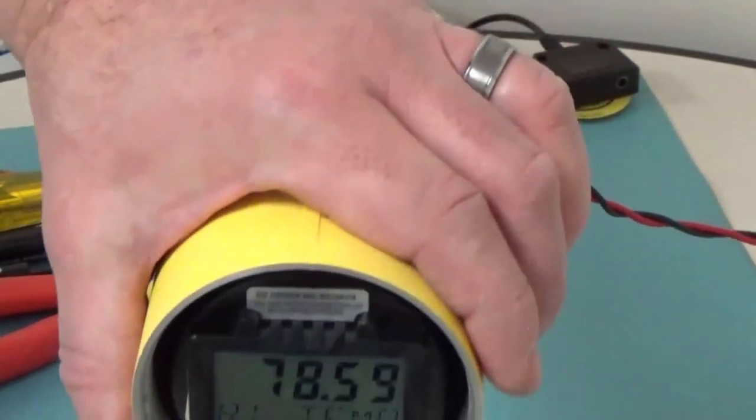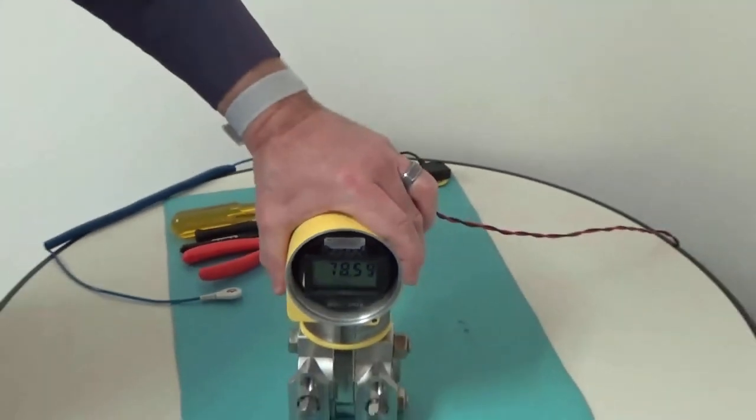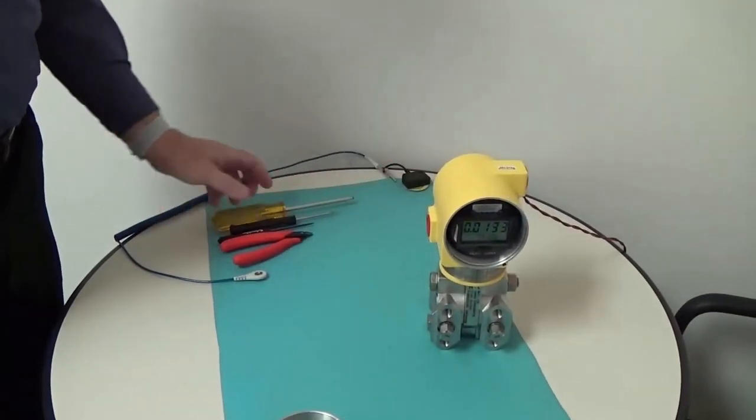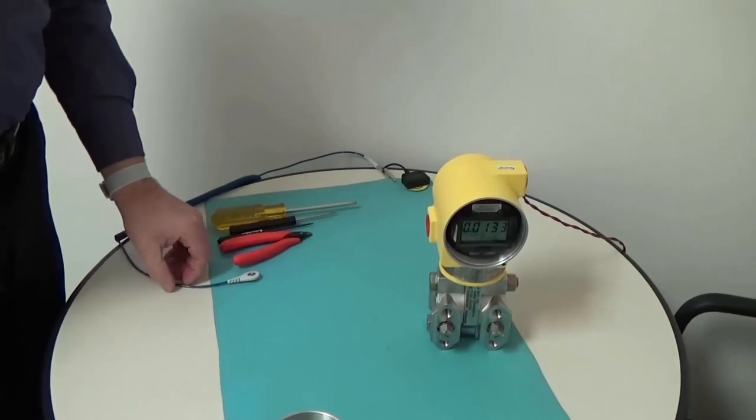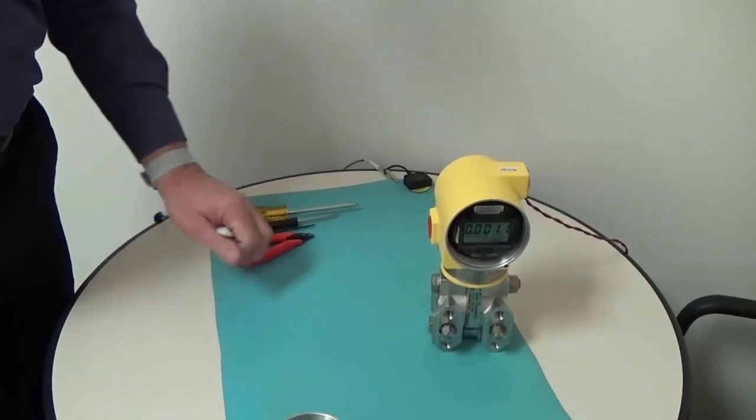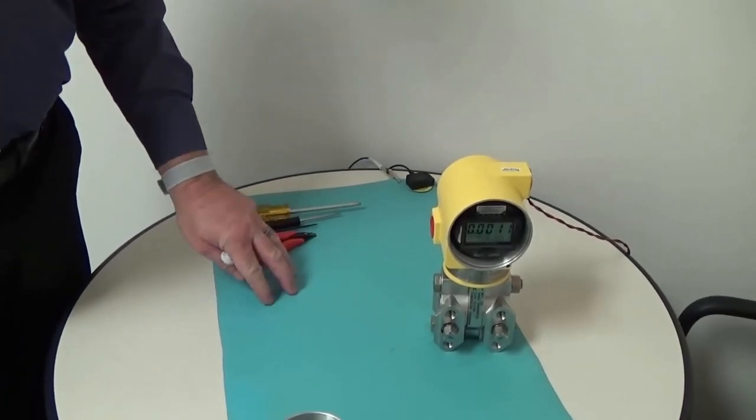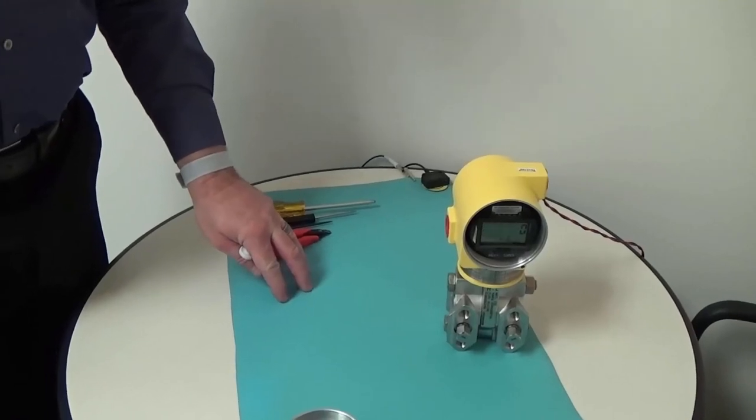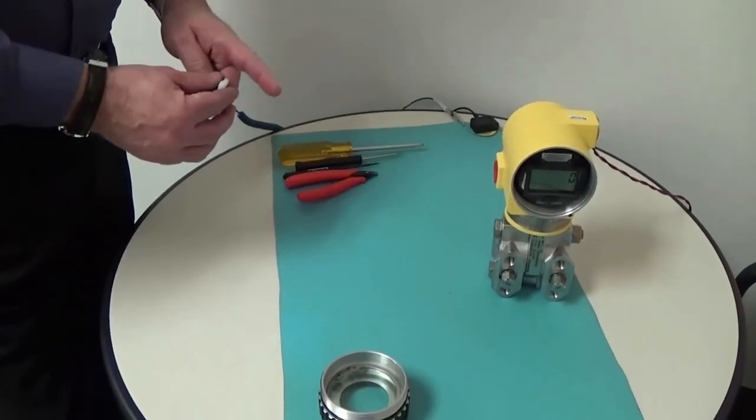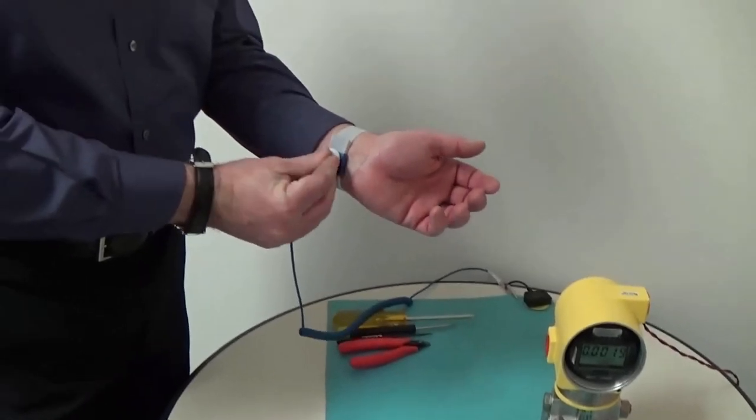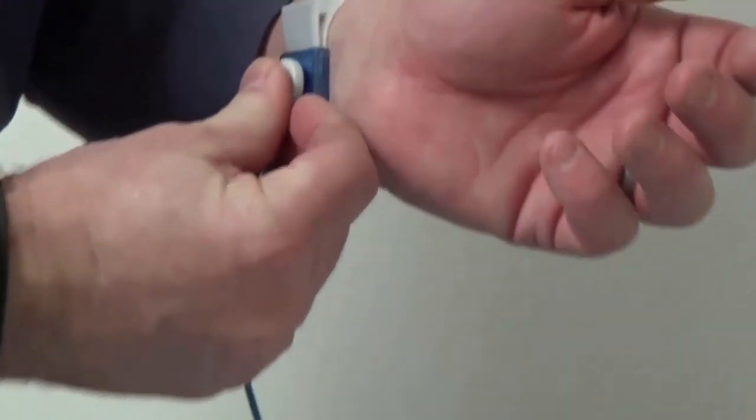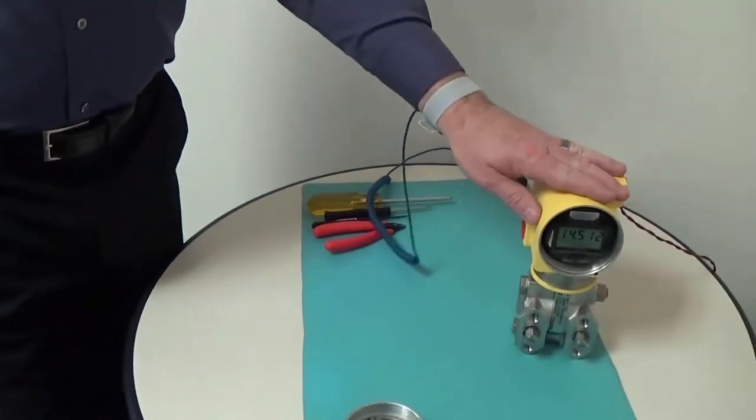One of the things we need to do in preparation is to make sure we have the appropriate tools available and anti-static procedures. This is an anti-static mat which has been grounded and connected to that is a wrist strap which makes sure that I don't have any static buildup when I'm working on the boards or the transmitter.